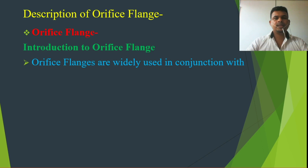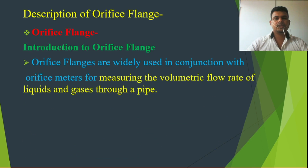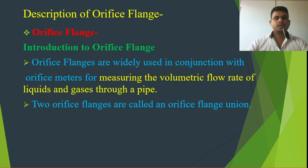Orifice flanges are widely used in conjunction with an orifice meter for measuring the volumetric flow rate of liquids and gases through a pipe. When we use orifice flanges, we use two orifice flanges together, and this combination is called an orifice flange union.